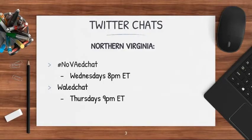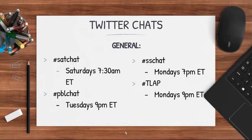This is often how I look back on those Ditch That Textbook chats because they're so late. If Twitter chats are completely new to you, I highly recommend just checking them out at first — you don't have to participate, just watch and see the progression and understand the rhythm. Some good Twitter chats to follow in the Northern Virginia area are Nova Ed Chat and Whale Chat. Other general chats include Sat Chat on Saturday mornings, PBL Chat for project-based learning, SS Chat for social studies teachers, and TLAP for fans of Dave Burgess' approach of teaching like a pirate. You can also do a quick Google search on Twitter chats for teachers to find all different types of chats to try.